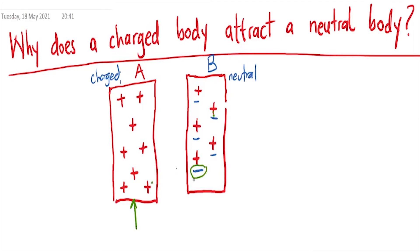These negative charges will be attracted towards this side. The electrons are attracted, so they are going to move closer to this surface right here. When they move closer to that surface, you are going to end up having an excess of negative charges on this side of the body. These negatives have drifted from the back.